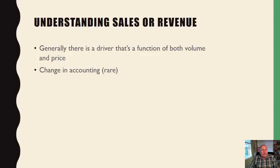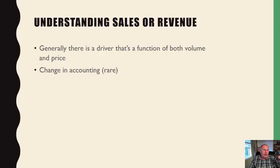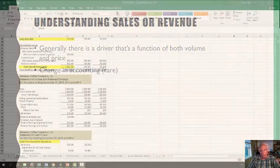Generally, there's a driver that's a function of both volume and price. We could also have a change in accounting, though that is fairly rare. Let's take a moment and look at both Geneseo Coffee Company and DXL sales.